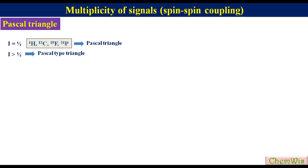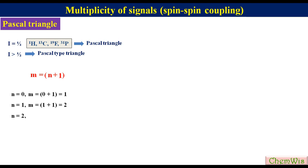We know that the multiplicity of a Proton NMR signal arising from coupling with nuclei having I = 1/2, like proton, equals N + 1. So if N = 0, multiplicity M = 0 + 1 = 1 (singlet). For N = 1, M = 2. For N = 2, M = 3. For N = 3, M = 4. For N = 4, M = 5, and so on.